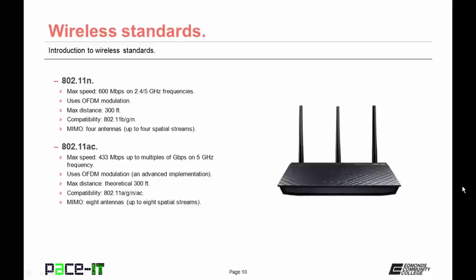Now talking about 802.11n — it has a maximum speed of up to 600 Mbps and can operate on both the 2.4 and the 5 GHz frequency bands. It uses OFDM as its form of modulation and offers a maximum distance of 300 feet. 802.11n is compatible with 802.11b, 802.11g, and 802.11ac. With the introduction of 802.11n, we now find MIMO — multiple input, multiple output — a technology that allows for increased speed on the wireless network. With 802.11n, there can be up to 4 antennas, which allow for up to 4 separate spatial streams.